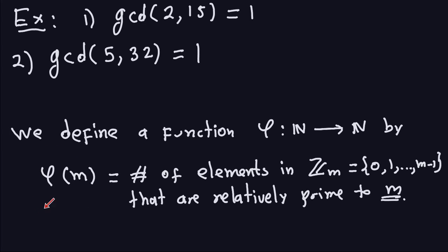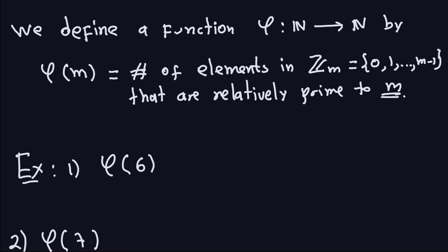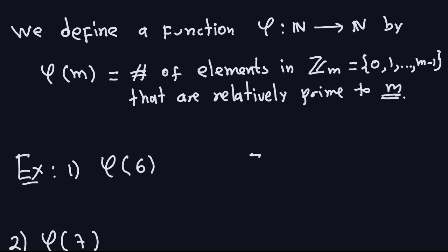That's actually a very important part of the RSA algorithm. So let's compute this function phi, which is the number of elements that are relatively prime with M that are in this set. Let's see a couple of examples. Let's say I want to compute phi of 6. To compute that, I need to know in Z_m what numbers are relatively prime with 6. So let's look at what the set Z_6 is: it's all the numbers 0, 1, 2, 3, 4, and 5.